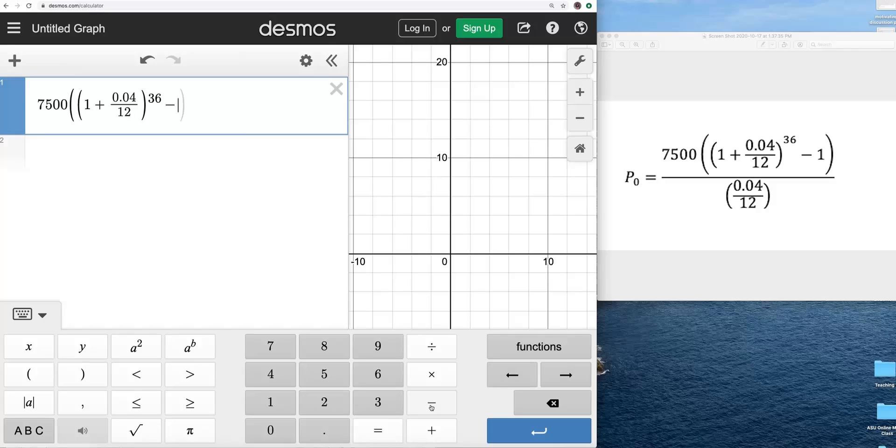I need to finish by typing minus 1 and close that parentheses up. Now, I'm almost done. I have a denominator, and how do we get that denominator? Well, again, we hit the symbol divide, and that puts us down in the bottom, or in the denominator of this expression right here. I need 0.04 divide 12, so let's put parentheses, 0.04 divide 12, parentheses closed.